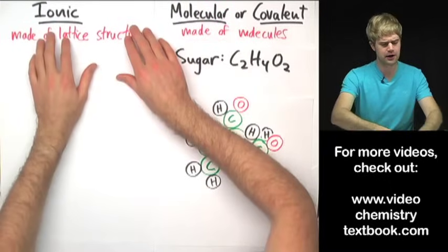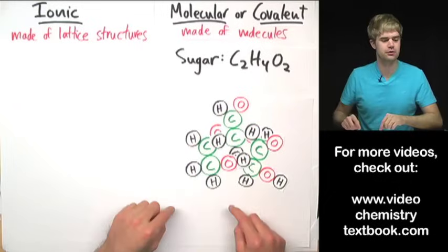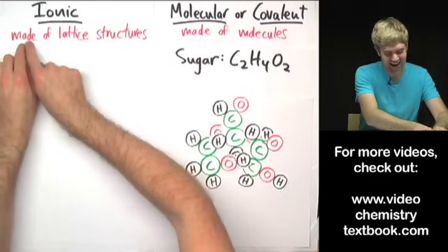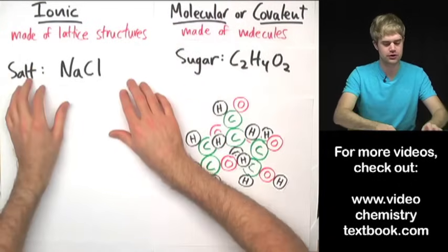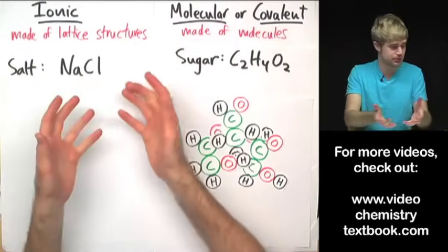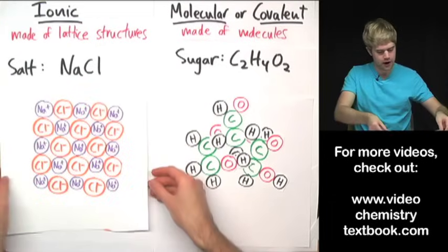On the other hand, ionic compounds—they're not made of clumps of atoms like molecules. They're made of what we call lattice structures. And here's what lattice structures are. The example I'm going to give you is salt, which is sodium chloride, table salt. And the lattice structures of sodium chloride look like this.